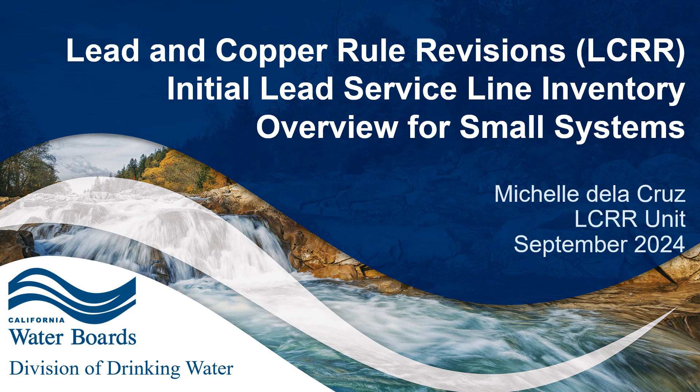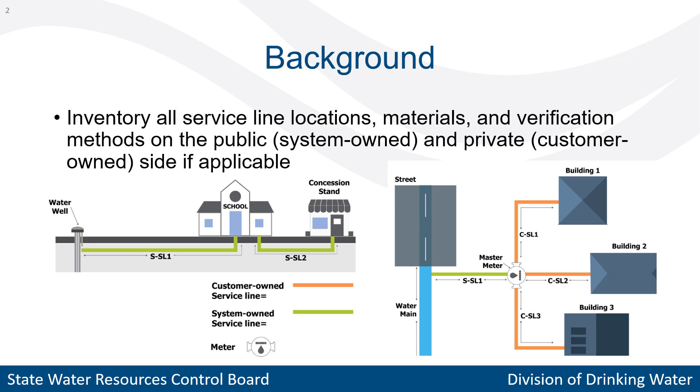This is an overview to help small water systems develop and submit the initial lead service line inventory, which is a federal requirement under the U.S. EPA's Lead and Copper Rule Revisions. The inventory must include all service line locations, materials, and verification methods on both the public and private side if applicable.